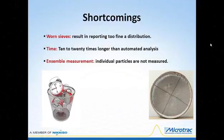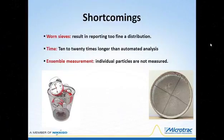Worn sieves are probably the largest source of error in sieve analysis. Working sieve nests wear, resulting in reporting finer and finer distributions over time. Standard procedures require working nests be recalibrated regularly using a calibration nest reserved only for that purpose, but this is seldom done in practice. Sieve analysis requires 15 to 20 minutes to complete including results calculation, considerably longer than computer-automated size analysis. Finally, sieve analysis is an ensemble measurement and cannot report individual morphological parameters on each particle.